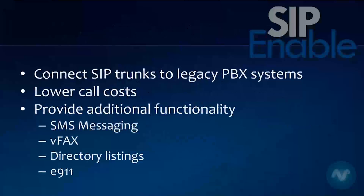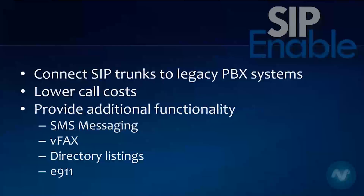The first one we're going to look at is SIP Enable. This is the first of the enabled line of products — a hardware device that allows you to connect SIP trunks to legacy PBX systems. It's going to provide lower call costs and allow you to add additional functionality to those systems once they're using Vitality SIP trunks. You can have SMS messaging, our VFax service, directory listings with white/yellow page 411 listings, and E911. Using the Padden products, we convert analog or digital PRI circuits to a SIP trunk that connects to Vitality.